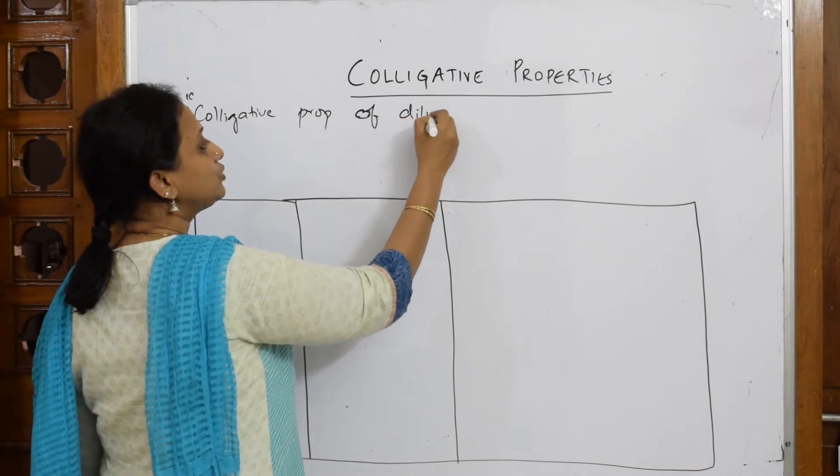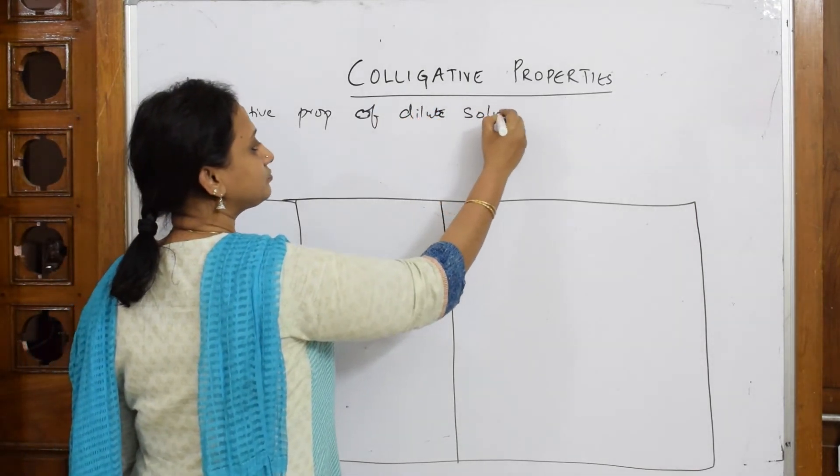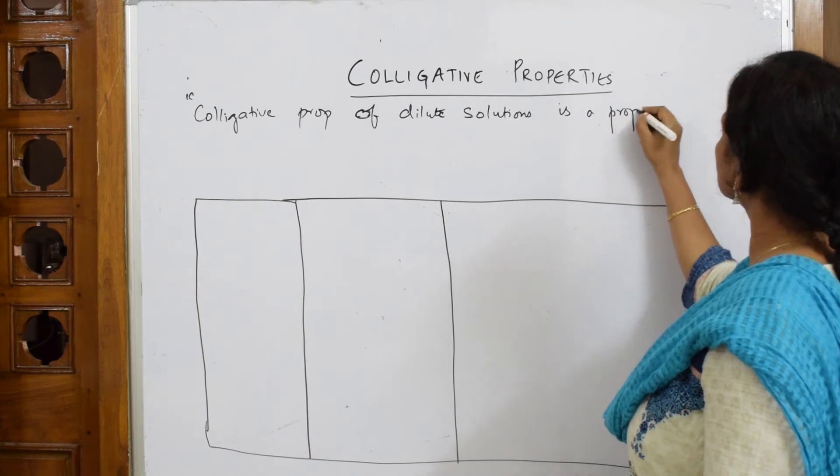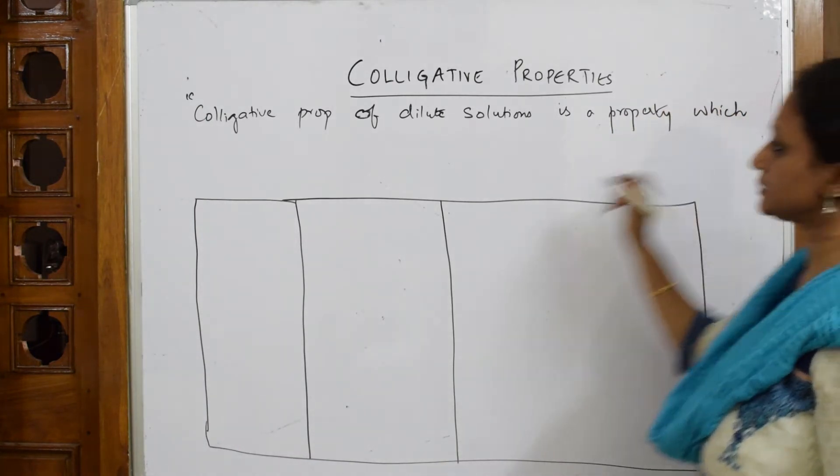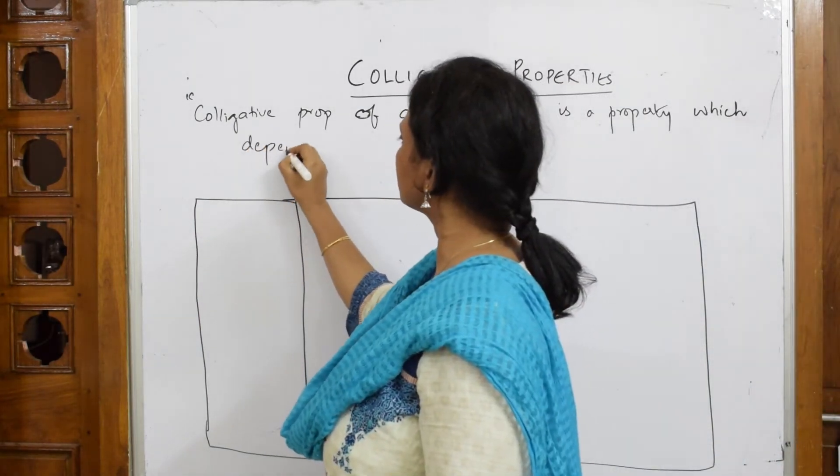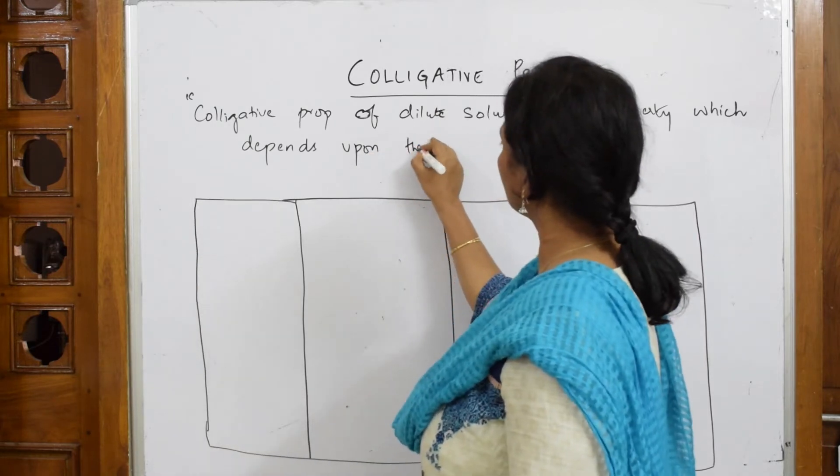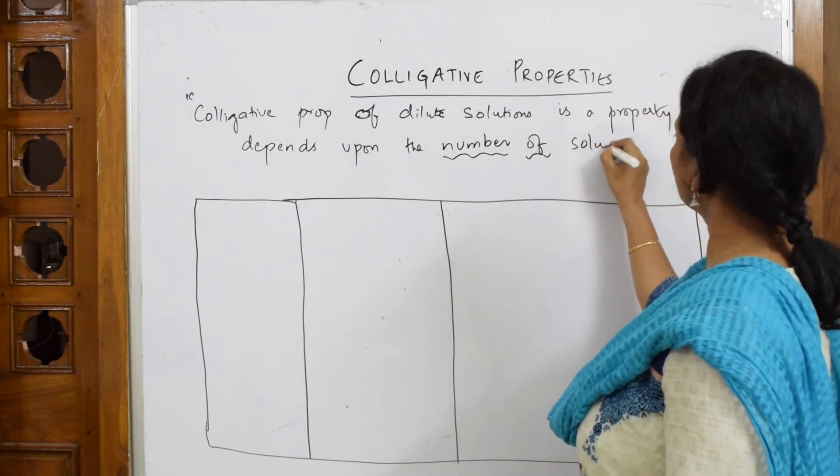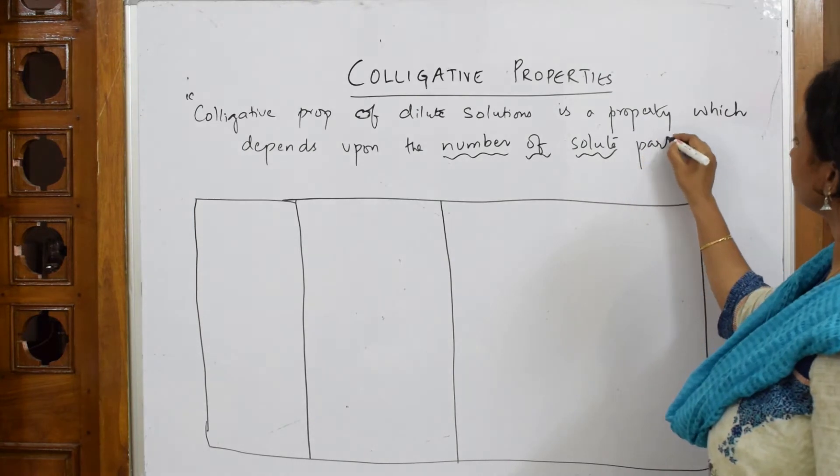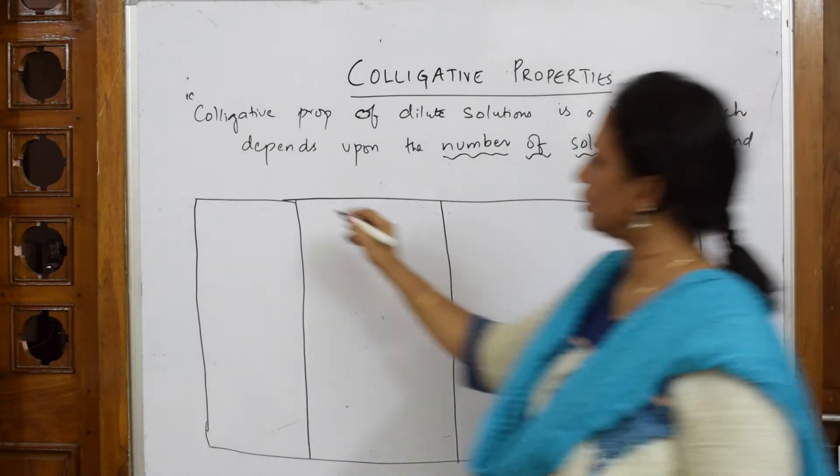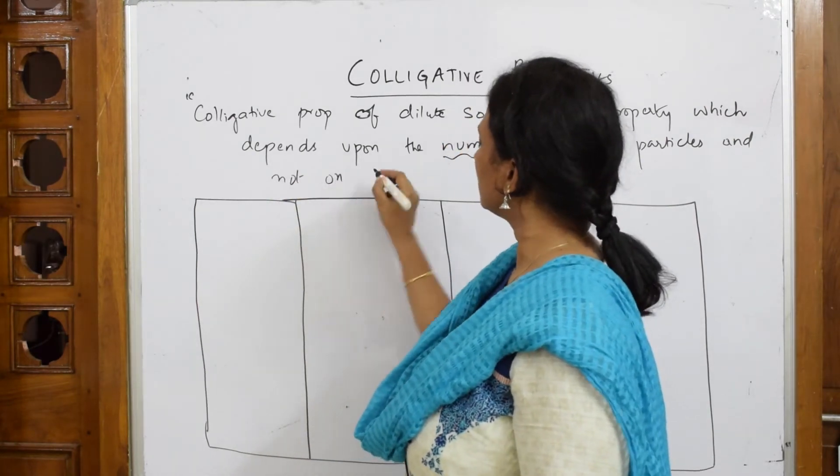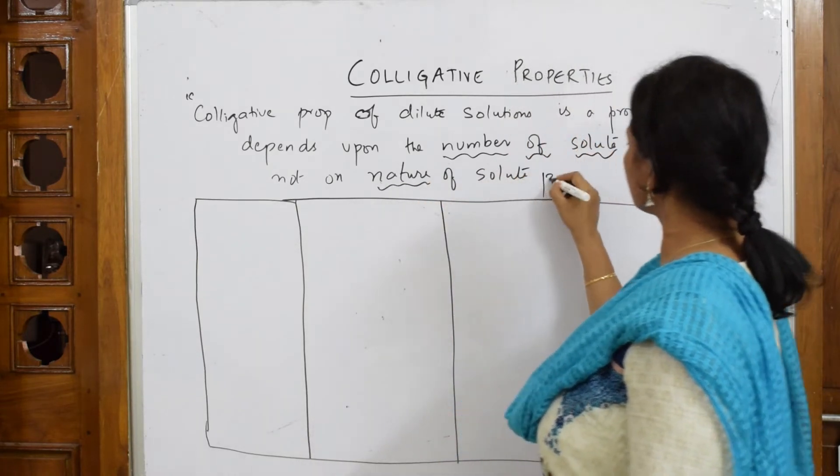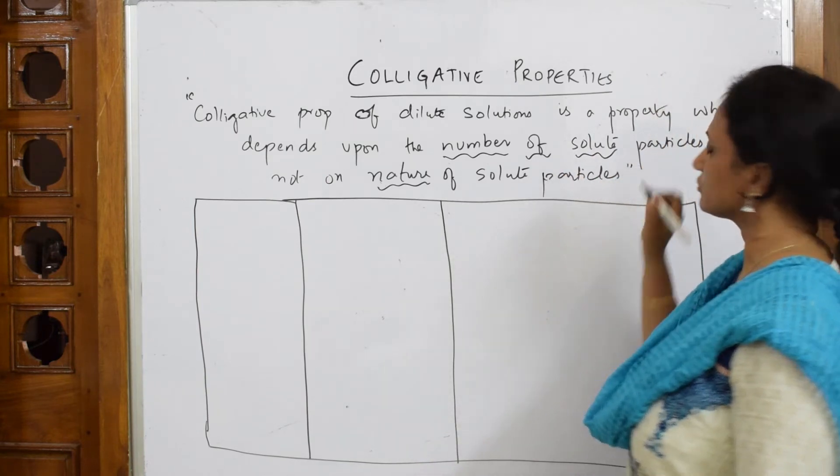Of dilute solutions is a property which depends upon the number—this is very important—number of solute particles and not on nature of solute particles. So not on the nature of solute particles. Basically, we are going to speak in terms of mole fractions only.